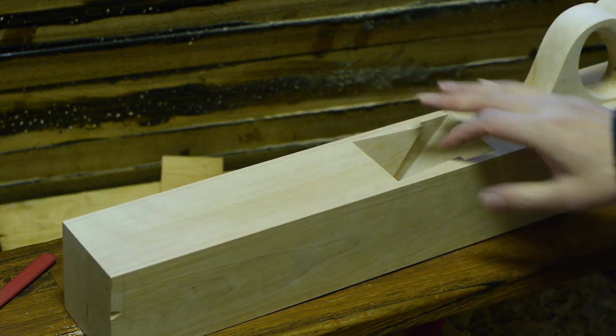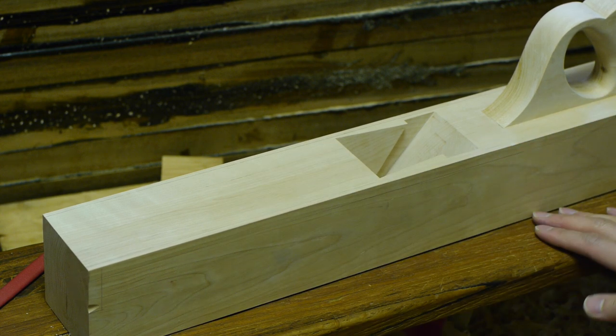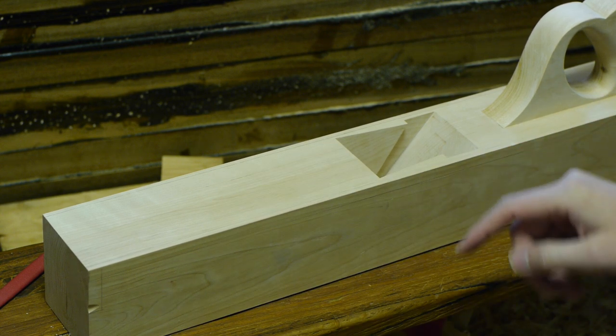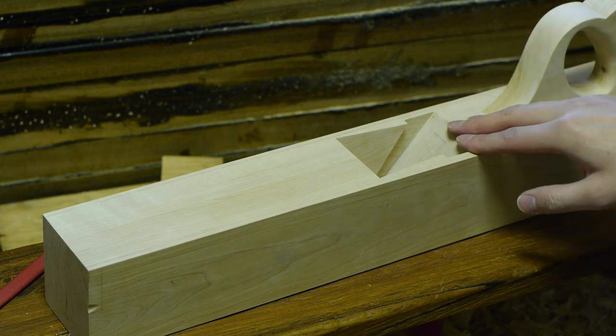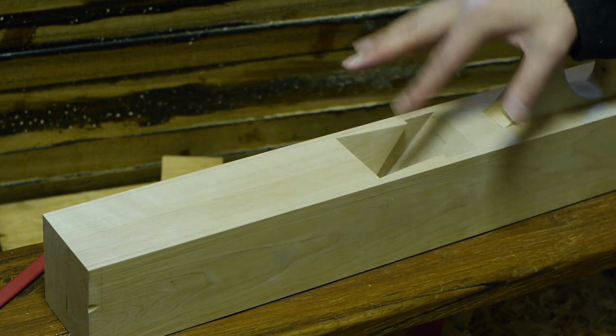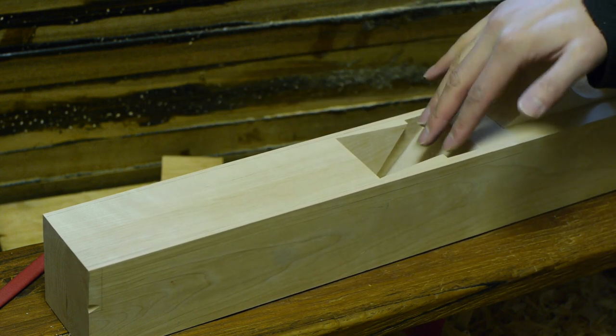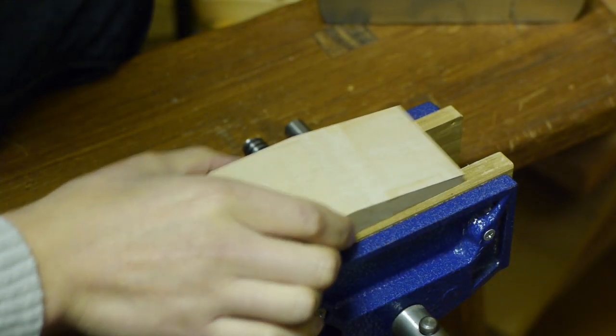Once you've done that, the whole plane, well the plane body, is pretty much done. So the only thing left is to true up the sole and flatten it and to put a finish on. But that's obviously the last thing you want to do. So the next thing you want to do after you've got the chamfers done is to make the wedge to keep your blade in place. And I'll show you that next.